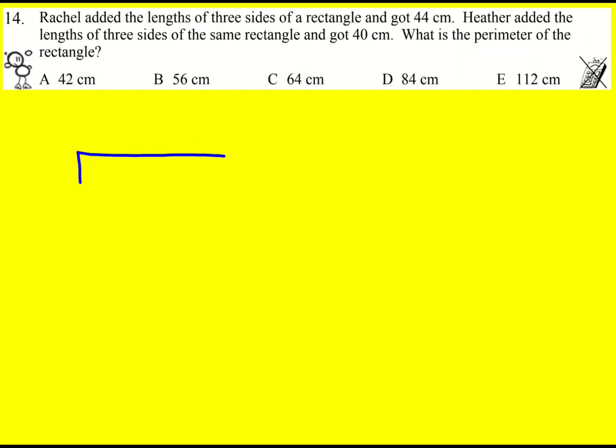I'm sensing some simultaneous equations here. Let's get this rectangle drawn and I'm going to label the shorter side A and the longer side B. It doesn't really matter.